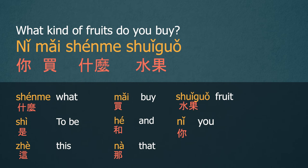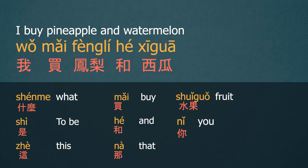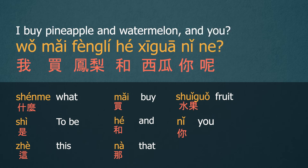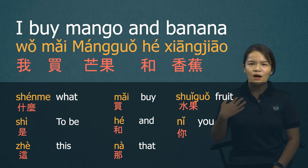Next sentence: 你买什么水果? What kind of fruits do you buy? 买 means to buy or to purchase. So 你买什么水果 — you buy what fruit — means 'what kind of fruit do you buy?' To answer, start with the personal pronoun 我 and the verb 买. 我买凤梨和西瓜 — I buy pineapple and watermelon. 你呢? And you? 我买芒果和香蕉 — I buy mango and banana.